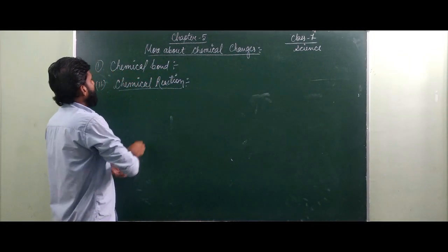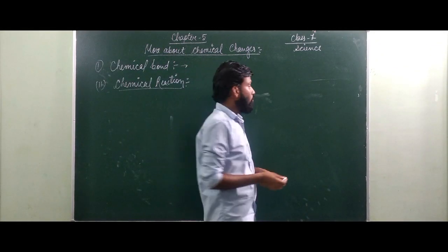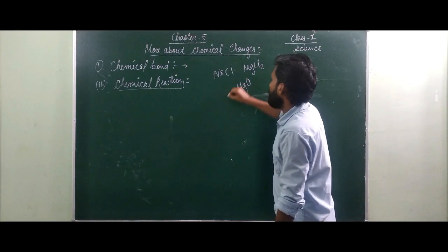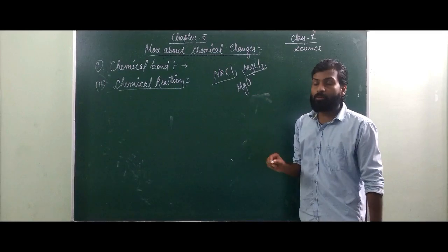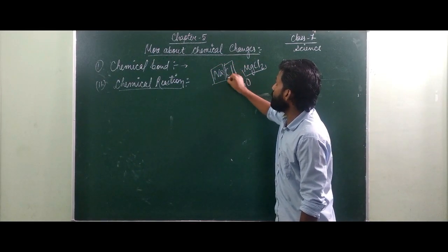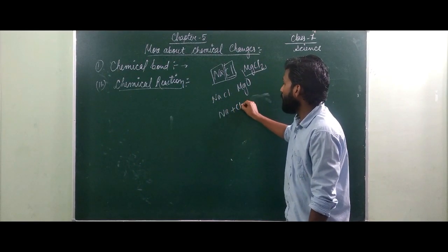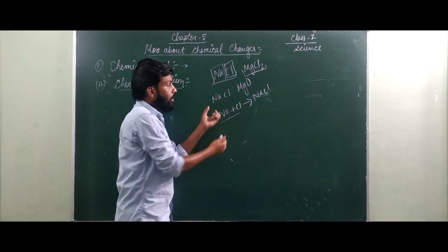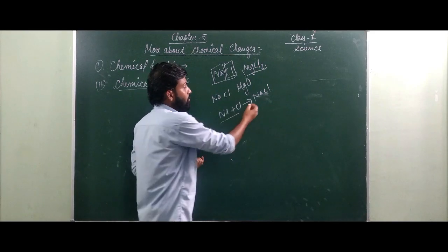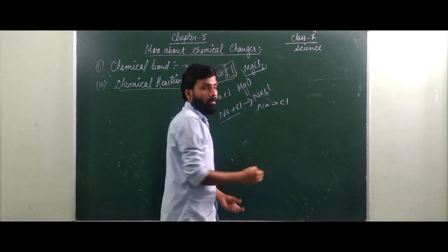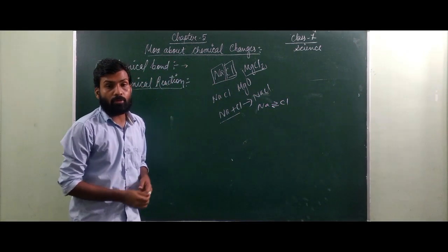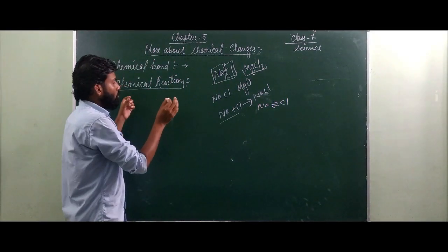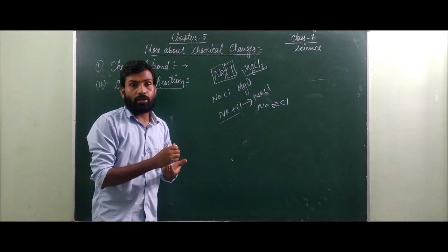First of all we will try to understand what is a chemical bond. In previous classes we came across compounds like NaCl, MgCl2, and MgO. These are known as chemical compounds, formed by combining two elements. Na and Cl have been combined together to form NaCl — before they were separate. This means Na is holding Cl by a certain amount of force, and this force is known as the chemical bond. A chemical bond is the bond in which two substances hold together to form a compound.